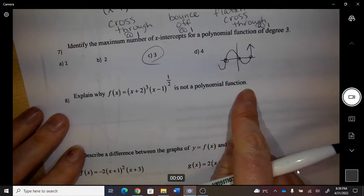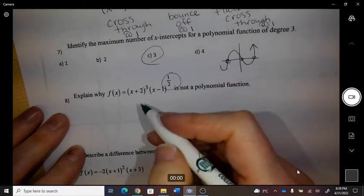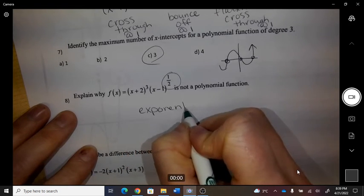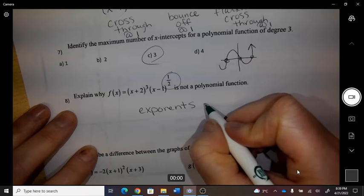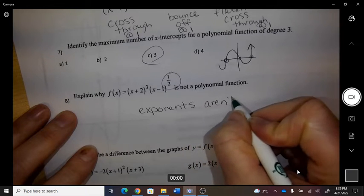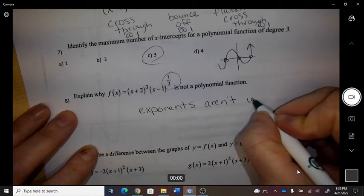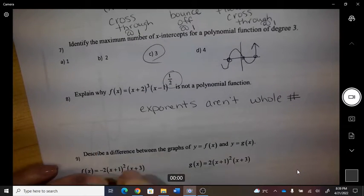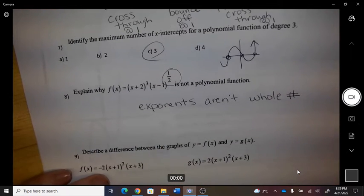Explain why this is not a polynomial. The exponents aren't whole numbers - you can't have an exponent of a half in a polynomial function.